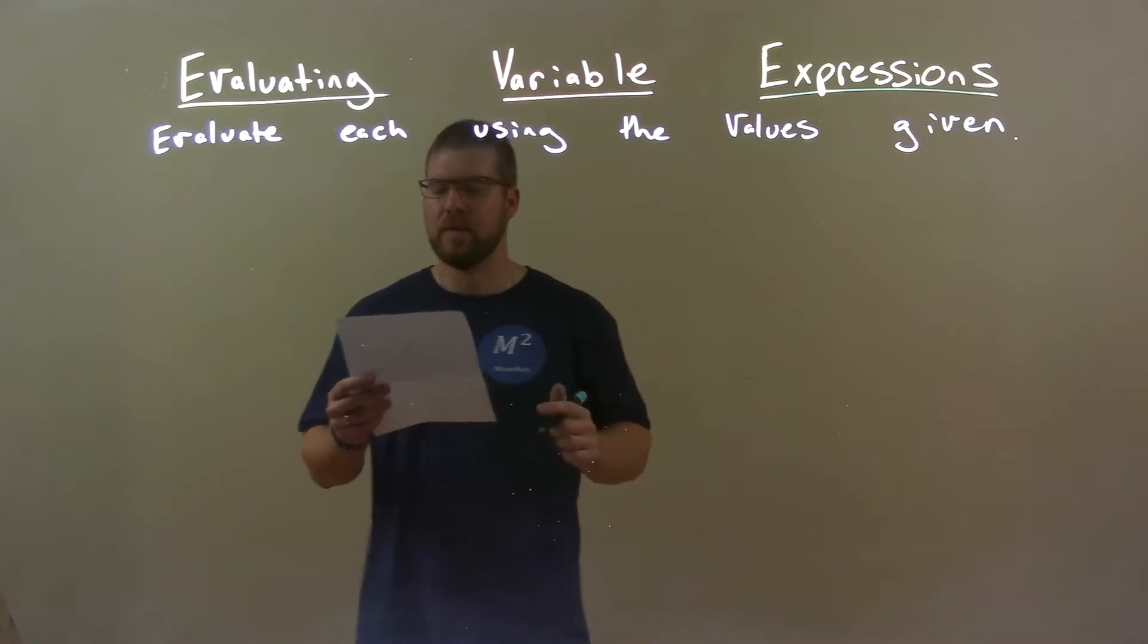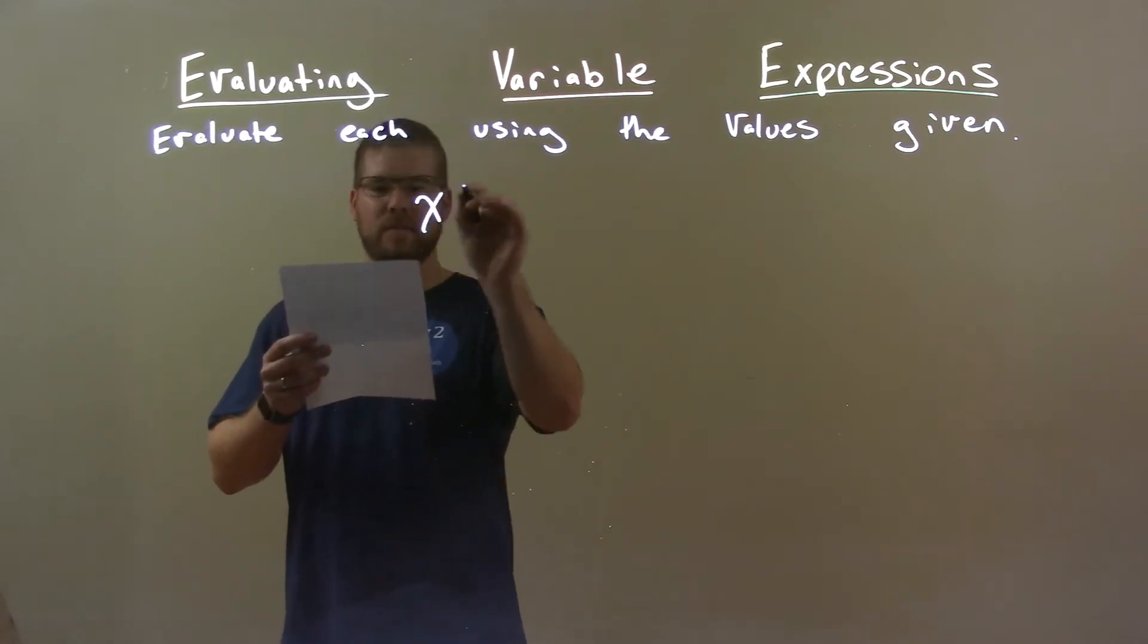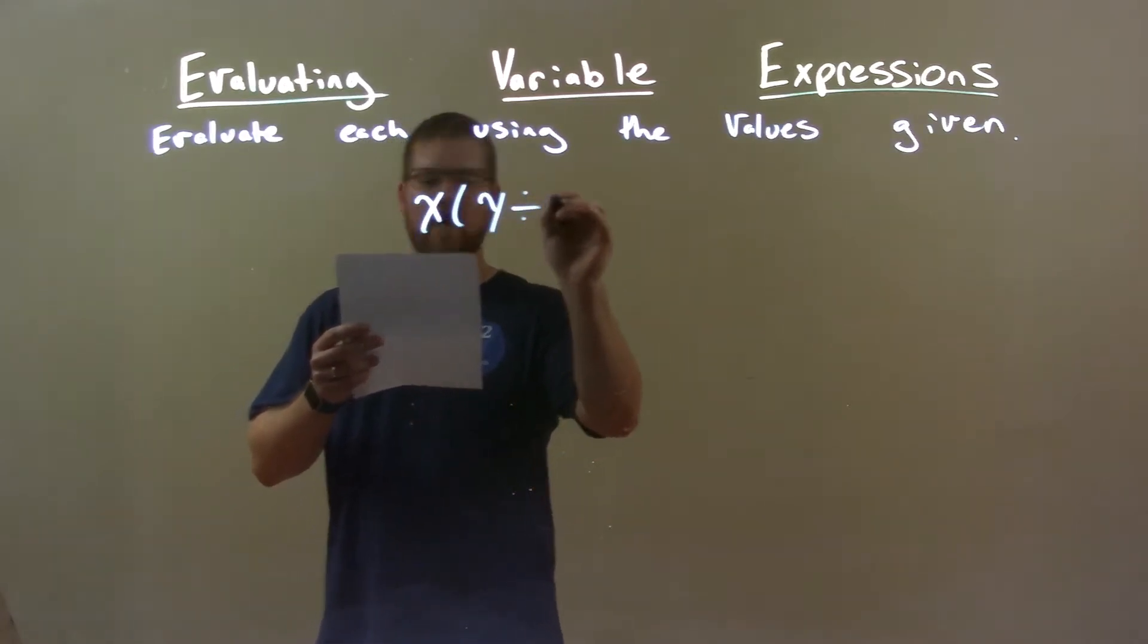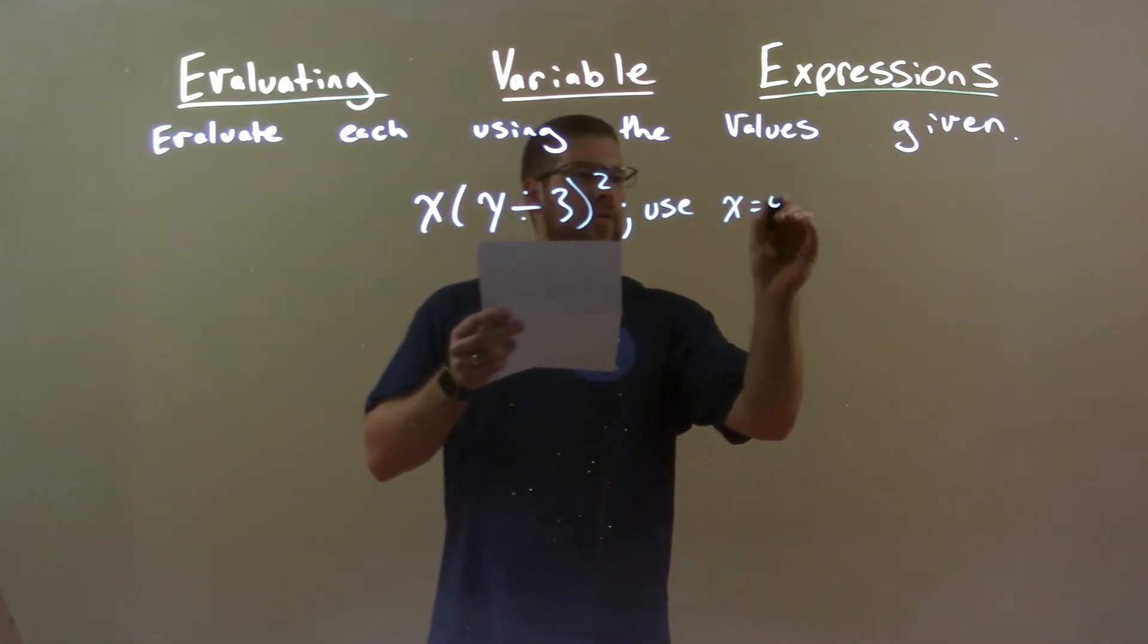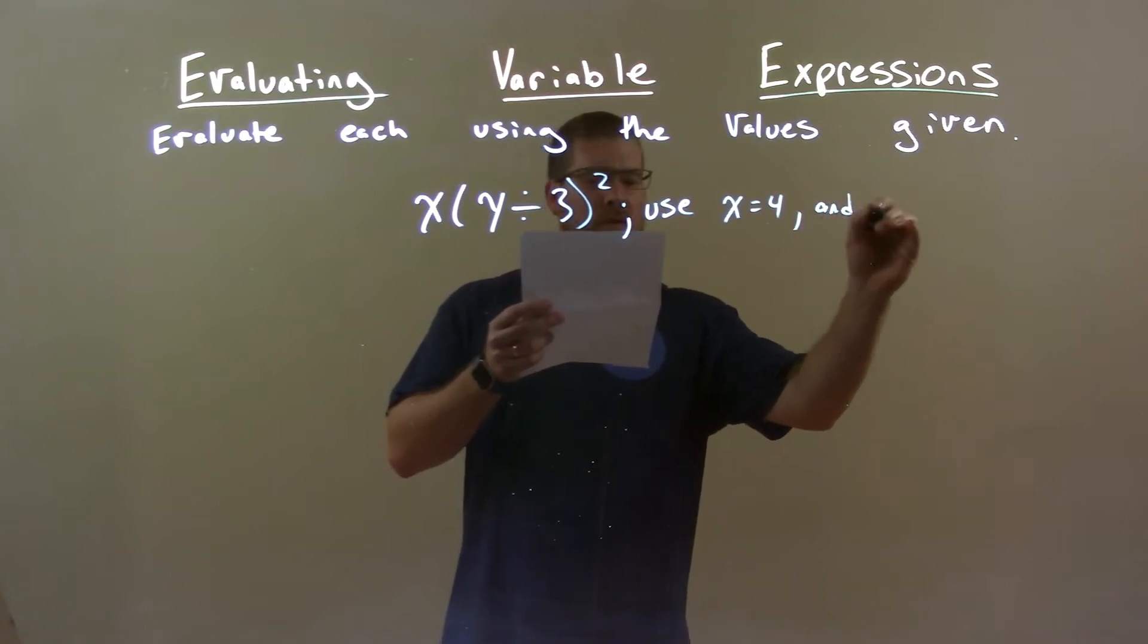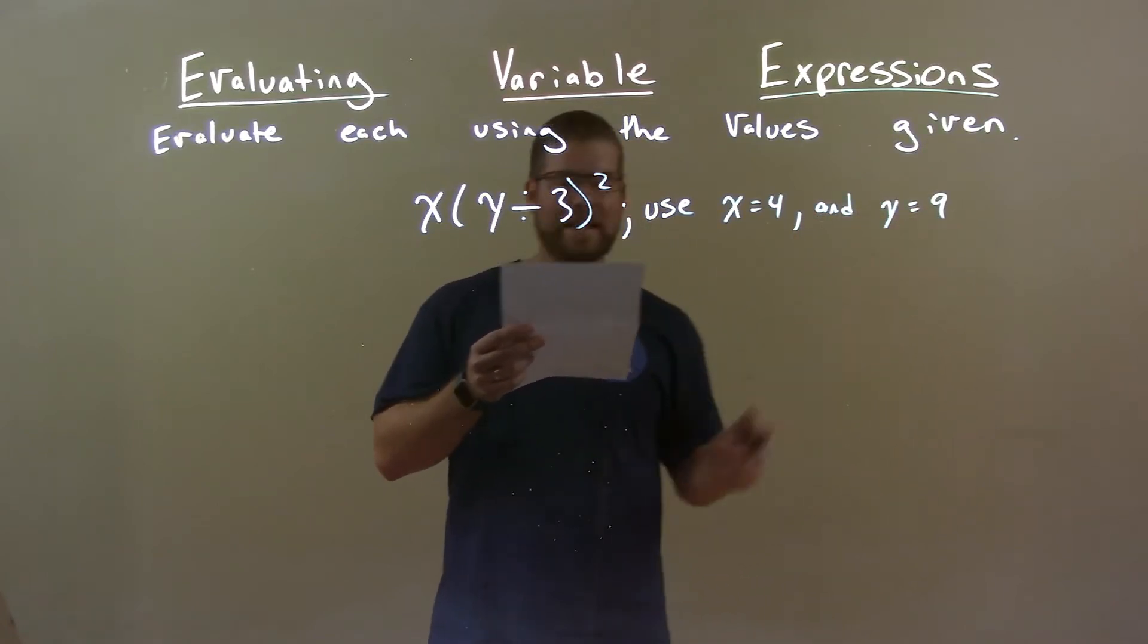So, if I was given this expression, x times y divided by 3 squared, and we're using x to be 4 and y to equal 9, alright?